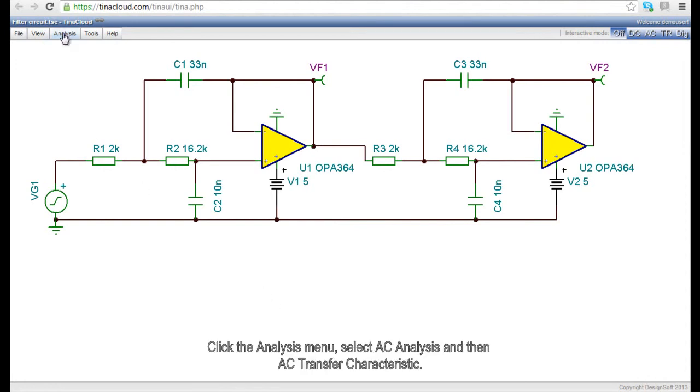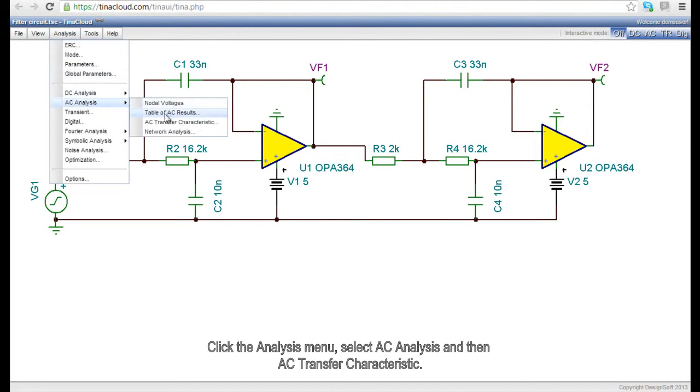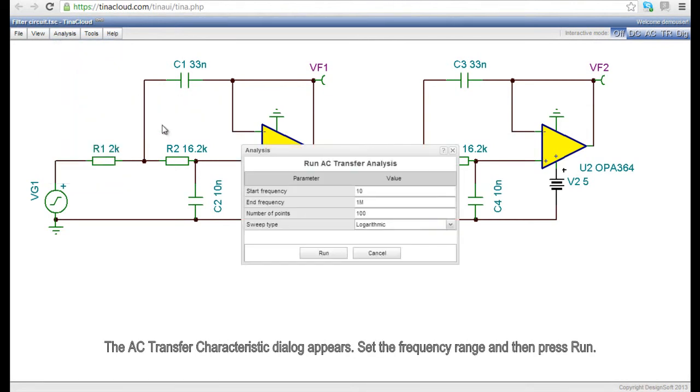Click the Analysis menu. Select AC Analysis and then AC Transfer Characteristic. The AC Transfer Characteristic dialog appears. Set the frequency range and then press Run.